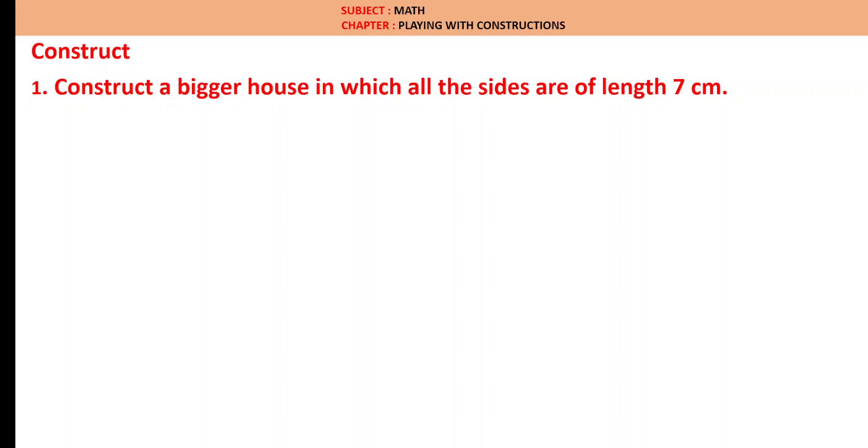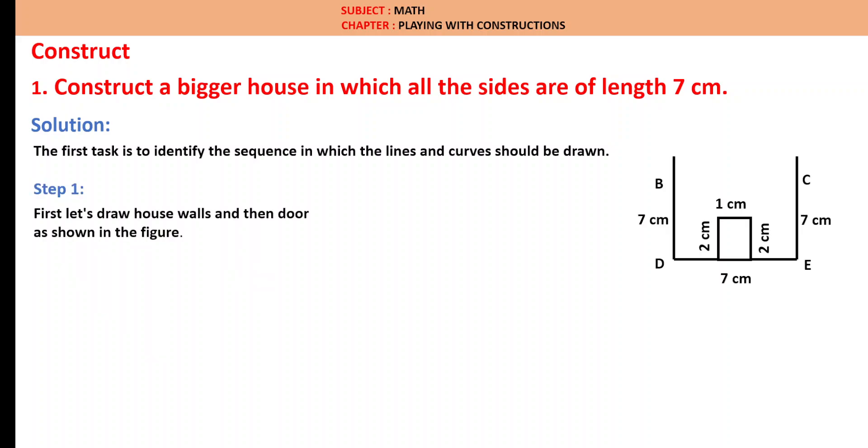Construct a bigger house in which all the sides are of length 7 cm. Solution: The first task is to identify the sequence in which the lines and curves should be drawn. First, let us draw house walls and then door as shown in the figure. Now let us draw DE width 5 cm, then BD perpendicular with 7 cm and CE wall 7 cm, and the door of height 2 cm and width 1 cm.